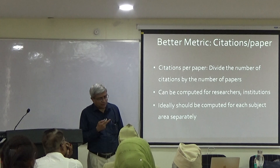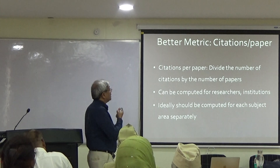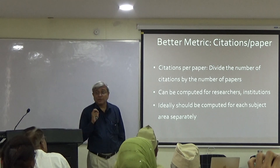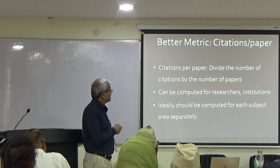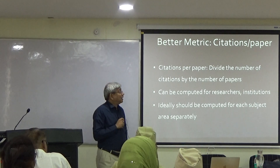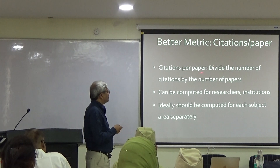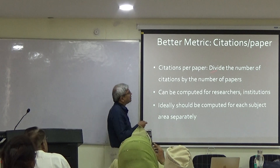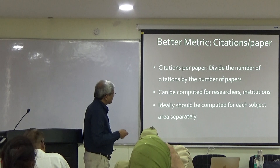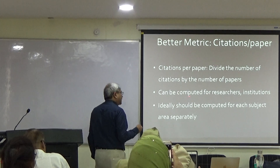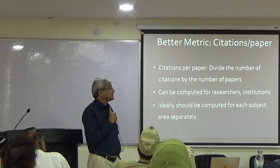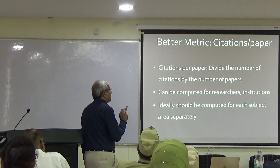On the whole, every metric has its flaws. But the better metric is to use citations per paper for comparing individuals — you divide the number of citations by the number of papers that the individual has published. It can be computed for researchers, institutions, etc. Again, it should be computed for each subject area separately. You should not compare across subject areas, even with this metric. That holds for any metric — you cannot compare across areas.